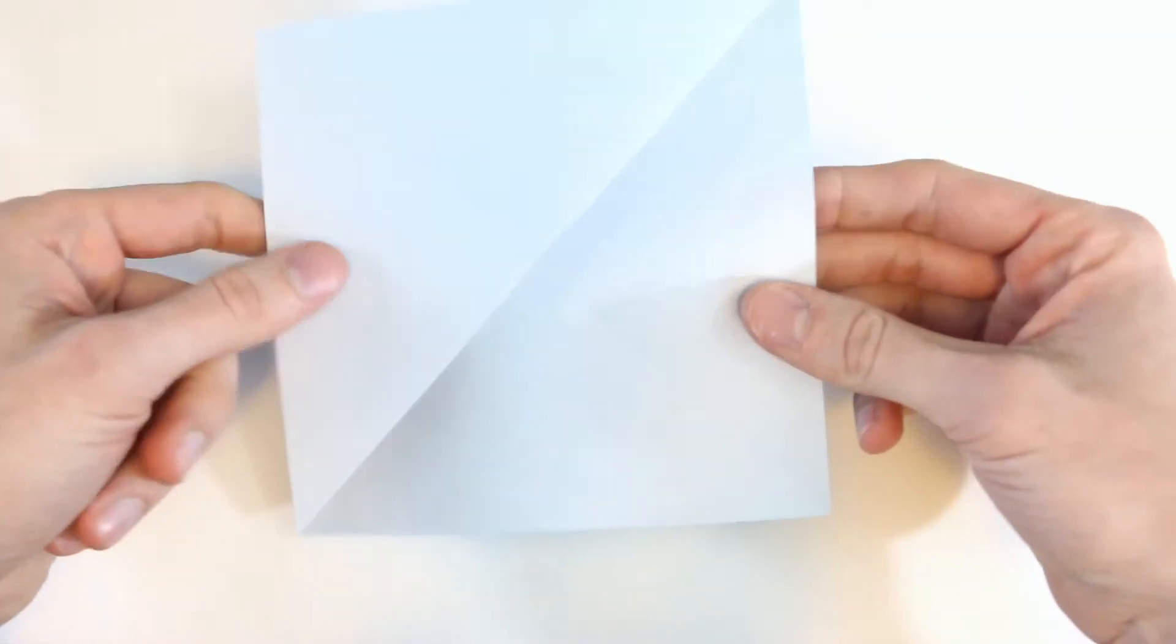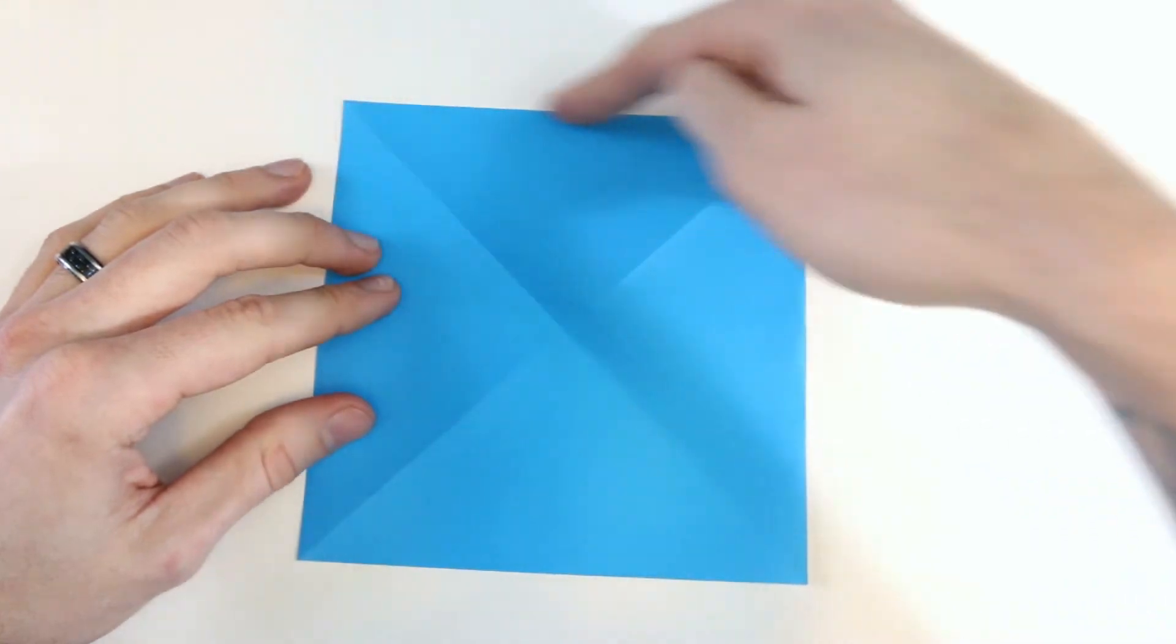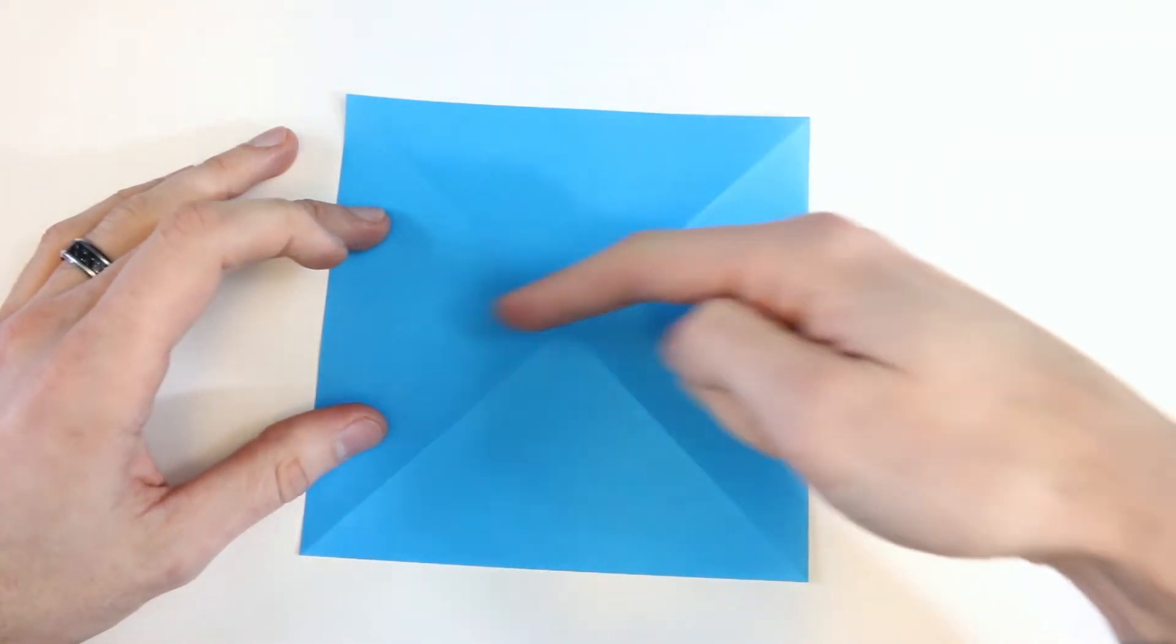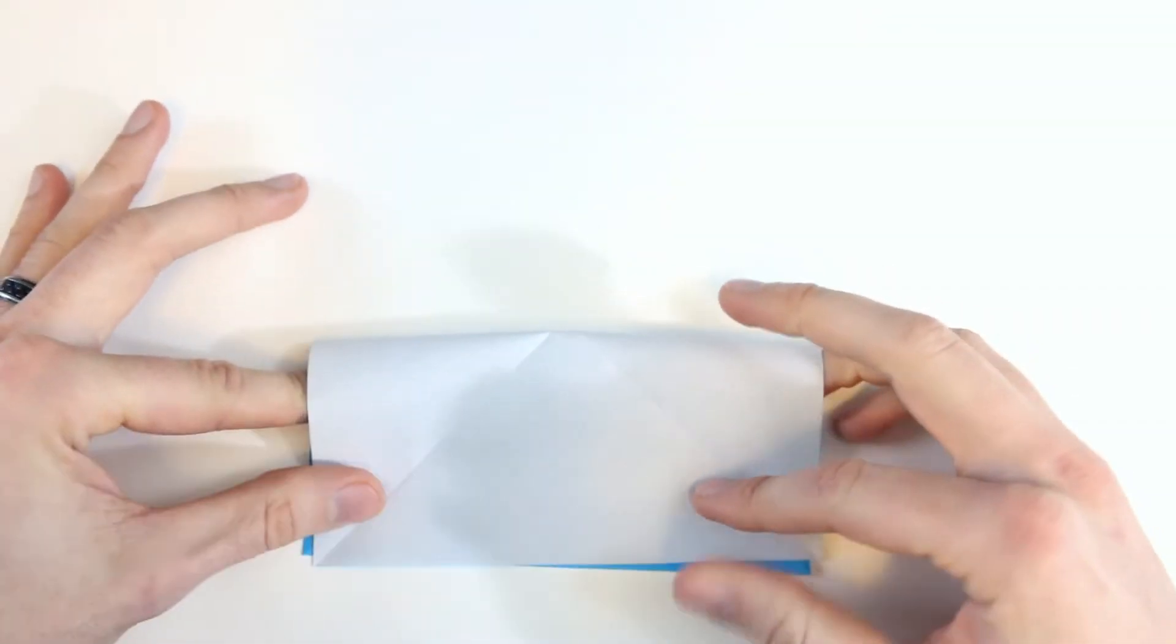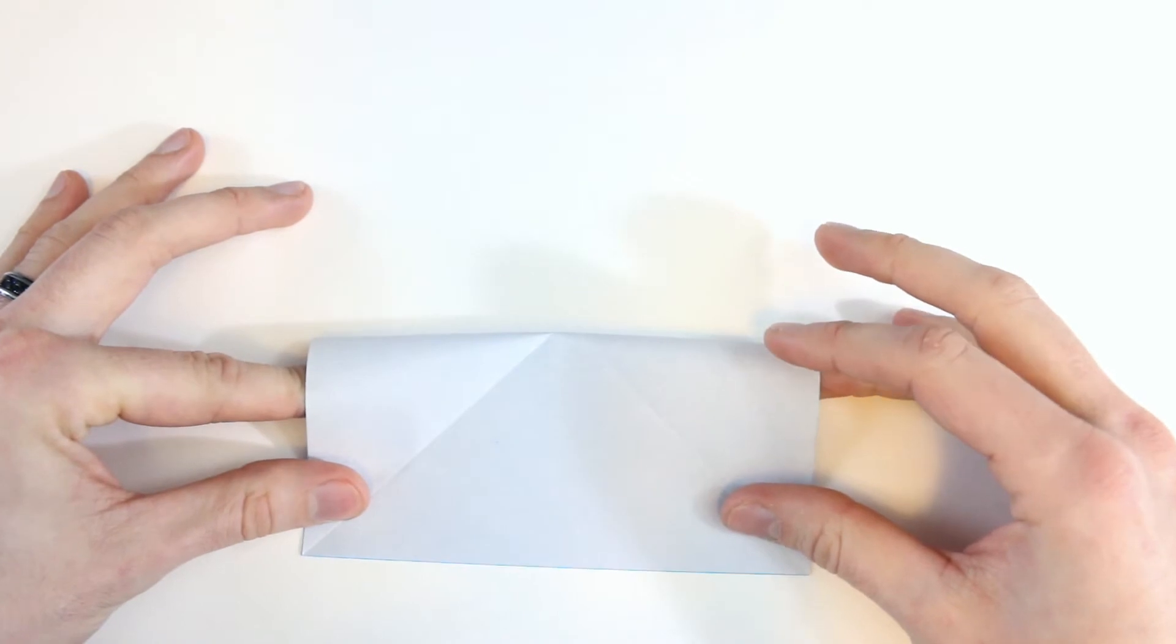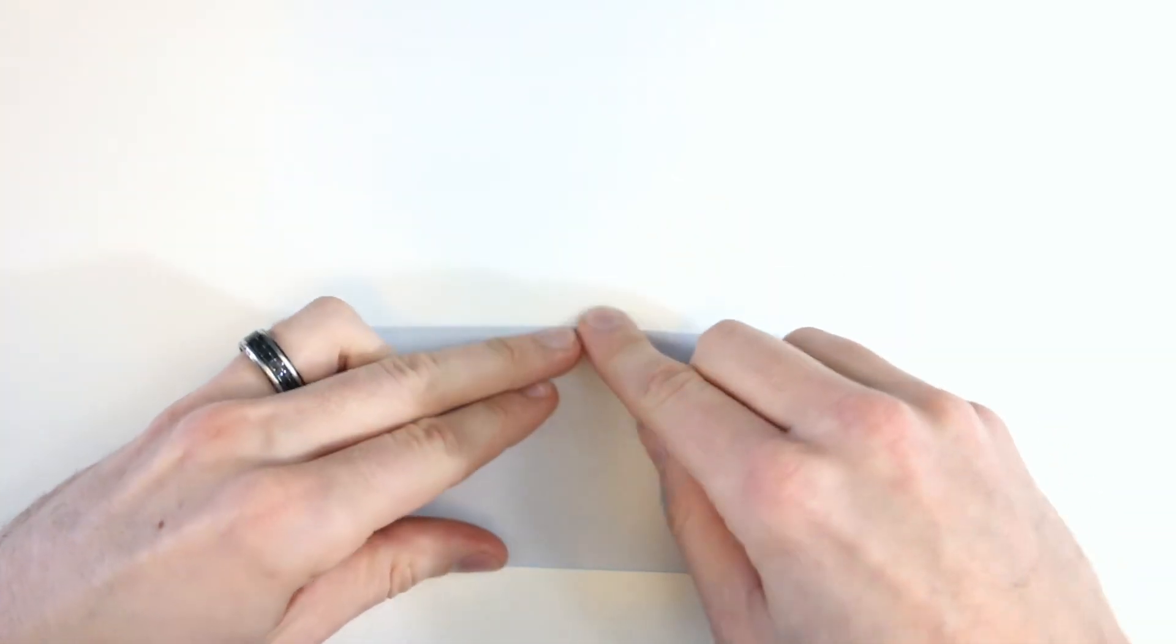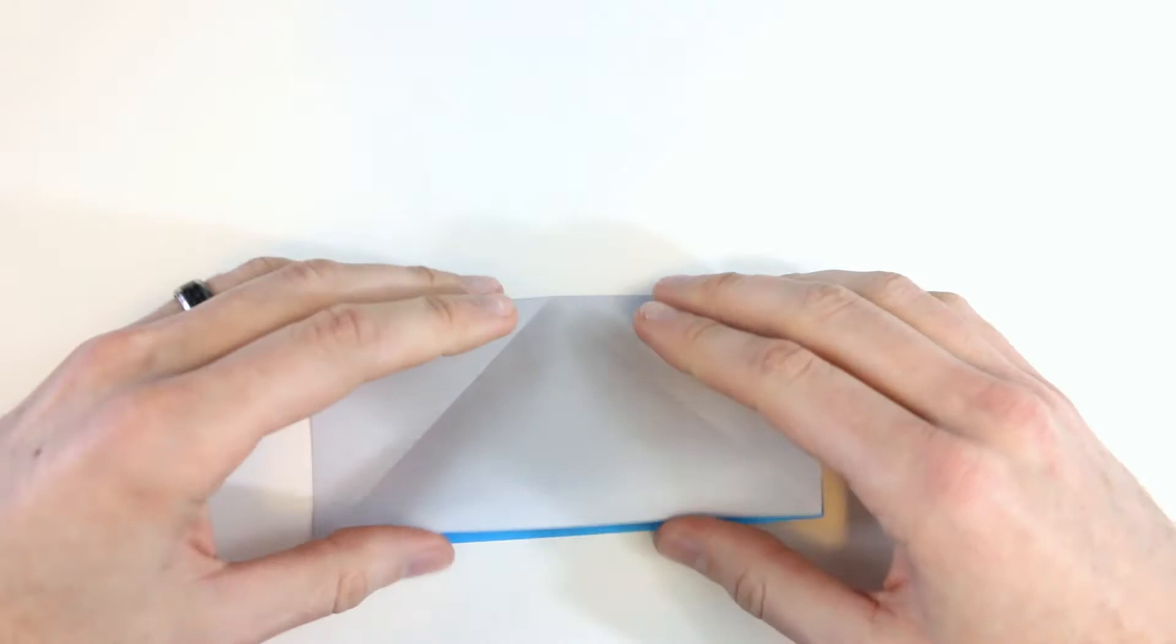Next we'll turn the paper over. Now we'll bring the top edge down to lie along the bottom edge. That'll form a valley fold that runs right through the center of this X here. So make sure both of those corners line up. And then crease it all the way across. And then unfold.